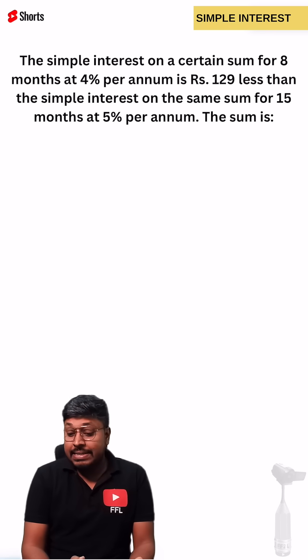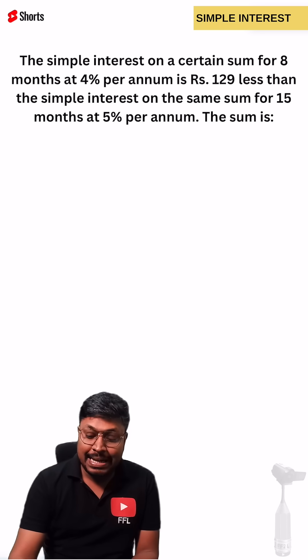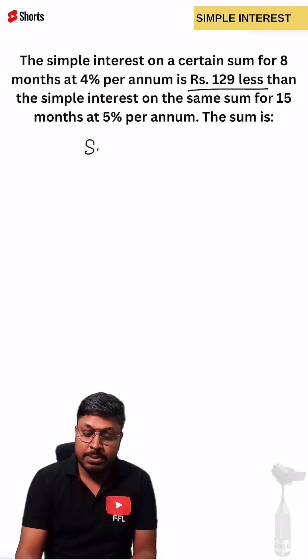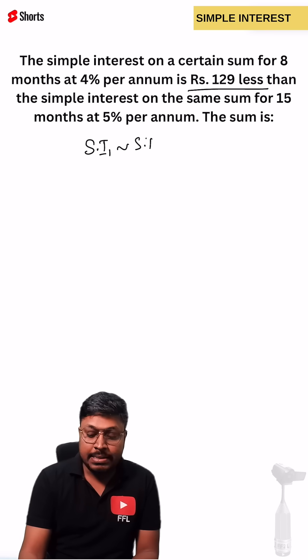Whenever I have taught you simple interest, whenever you find a word like 129 less or 100 more or 200 more, that means the difference between two simple interests is 129. Because one simple interest when compared to another is 129 less, that means the difference between simple interest 1 and simple interest 2 will be 129.